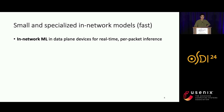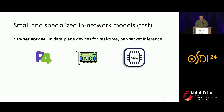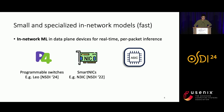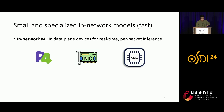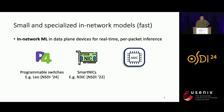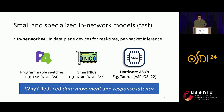To cope with strict latency and throughput requirements in practice, a popular approach is to use small and specialized in-network machine learning models, usually deployed in data plane devices or accelerators. Examples include programmable switches, SmartNICs, and hardware ASICs. This approach leads to a drastic reduction in data movement in the network and consequently a drastic reduction in response latency.